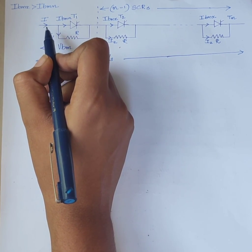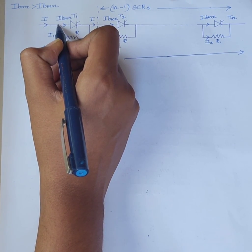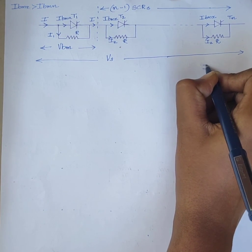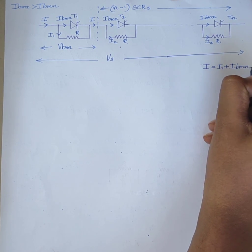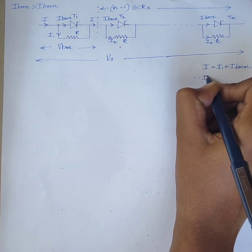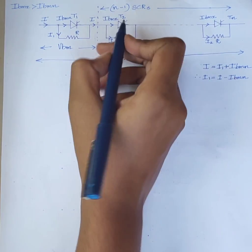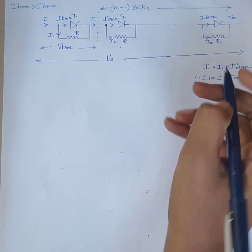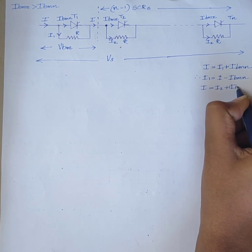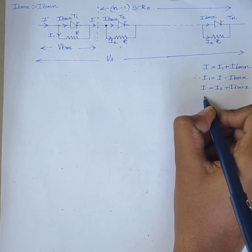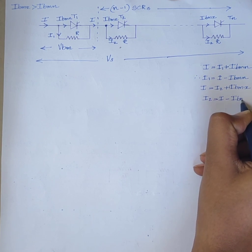Applying Kirchhoff's current law at the junction of SCR1: I = I1 + IBMN, therefore I1 = I − IBMN. Similarly, at the junction of the other SCRs: I = I2 + IBMX, therefore I2 = I − IBMX.